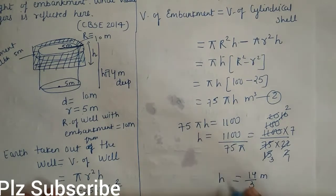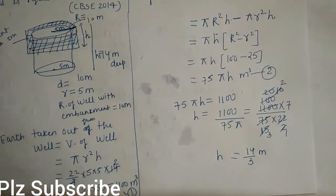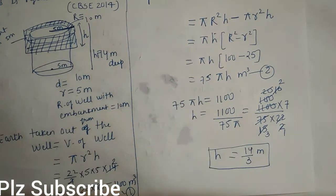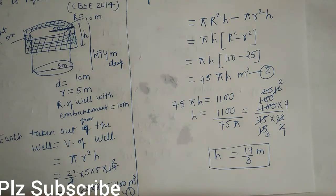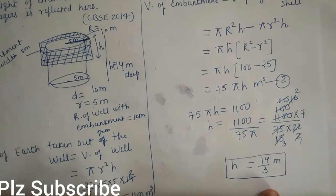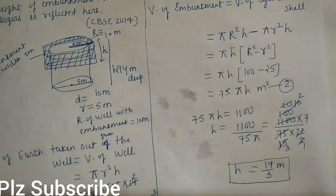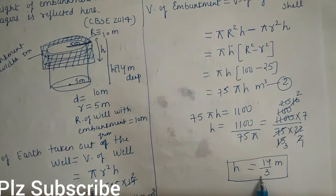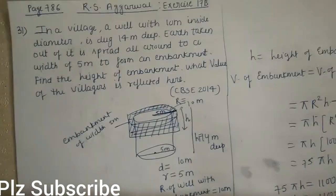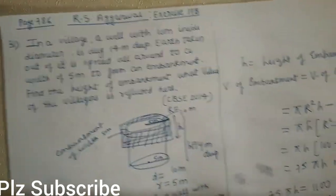So the height of the embankment is 14/3 meters. The answer given in the book is wrong — we have checked it on the internet. The correct answer should be 14/3 meters, so please make the correction in your book. With this, question 31 is completed. Now we move to question number 35.